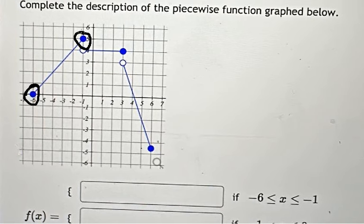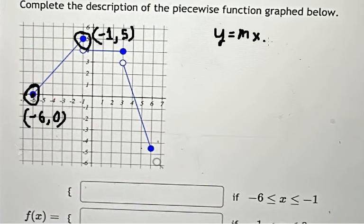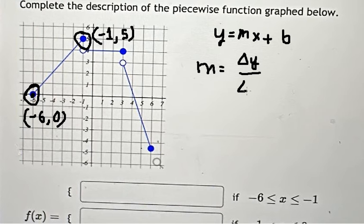The second point is this one here. The first point is at x = negative six, y = zero, so we have the point (-6, 0). The second point is at x = negative one, y = five, so we have (-1, 5). We can see this is a straight line, so we use y = mx + b, where m is the slope, which is delta y over delta x.